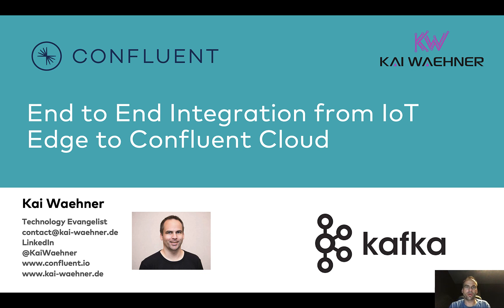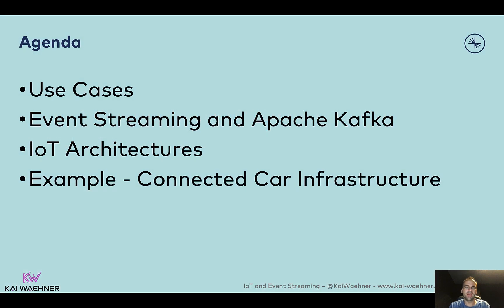Hey everybody, this is Kai Wehner from Confluent. Today I want to talk about end-to-end integration from Internet of Things and the Edge to Confluent Cloud and event streaming with Apache Kafka. In this session, I will start with an overview about some different use cases, then talk about event streaming with Kafka and how that can help with IoT projects. I will cover a few different IoT architectures from hybrid to cloud and then give two examples for connected infrastructure where you can see how this looks in the real world.